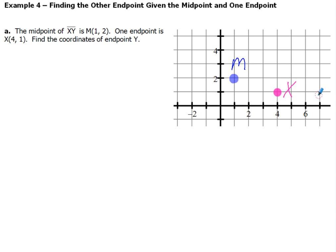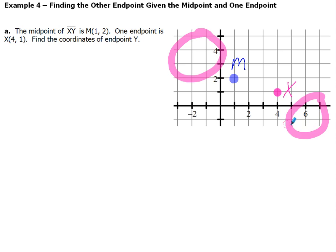Now if we take a look at this from a common sense perspective, X is over on the right-hand side of my midpoint. So if M is in the middle, that means my other endpoint has got to be somewhere over on the left side, because otherwise M wouldn't be the midpoint. If it were on the right, then X would be the one in the middle and not M. So we've got to make sure, just from a common sense perspective, we look in the right area.